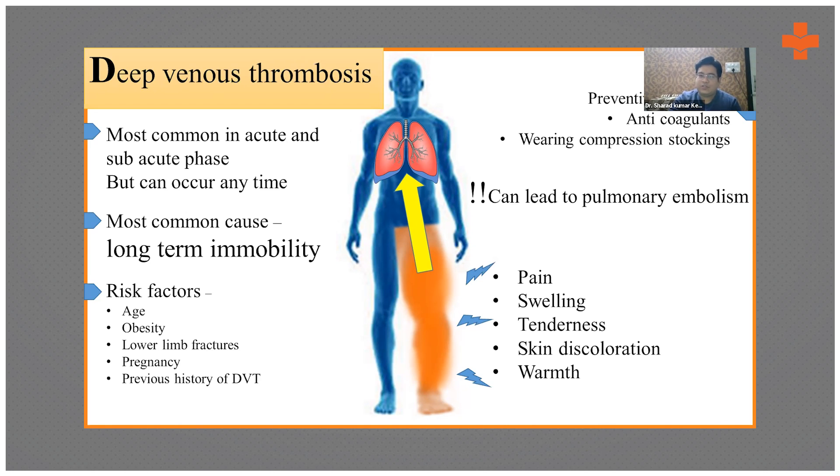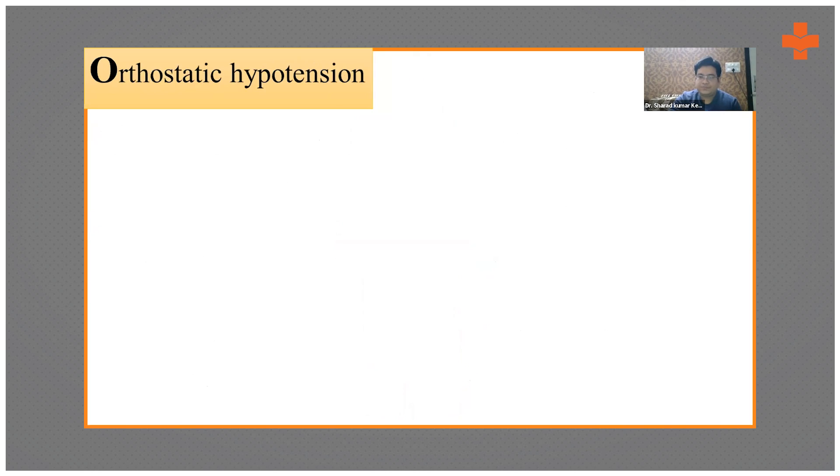This patient will invariably develop orthostatic hypotension because the patient lies in bed for a long time. We are talking about the chronic spinal cord injury patient.